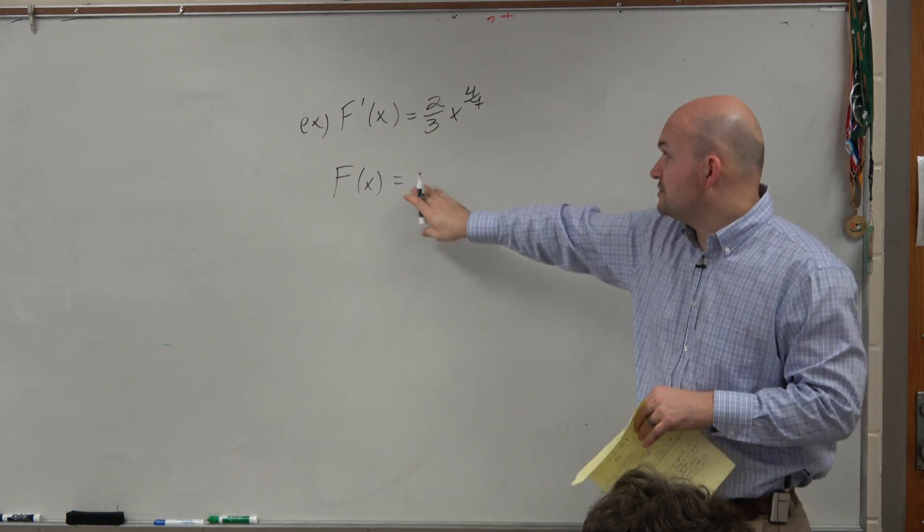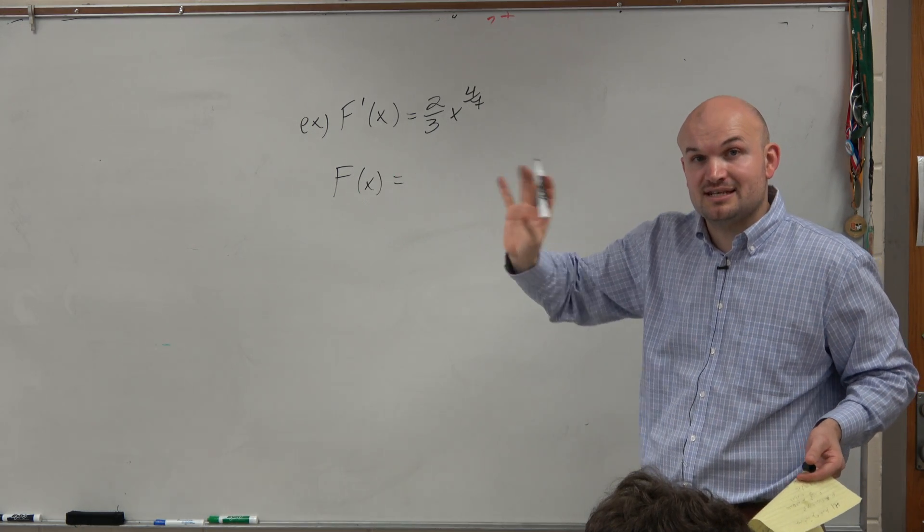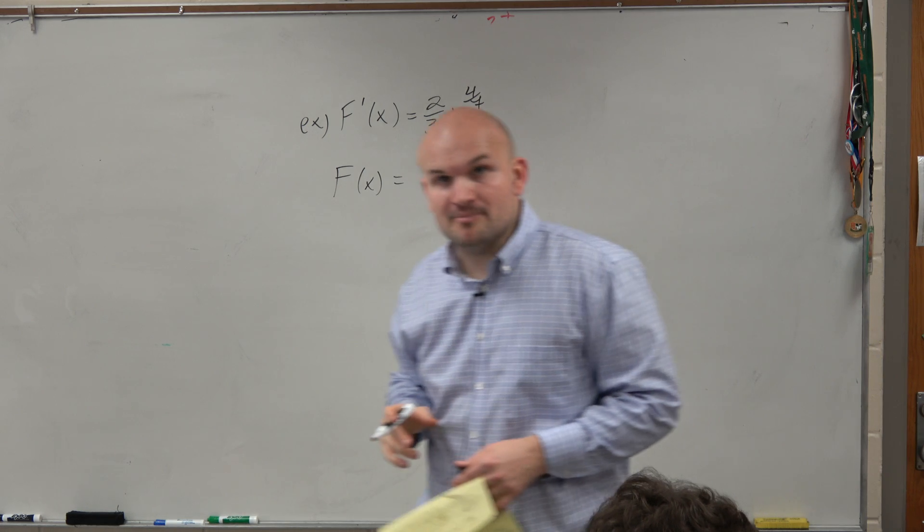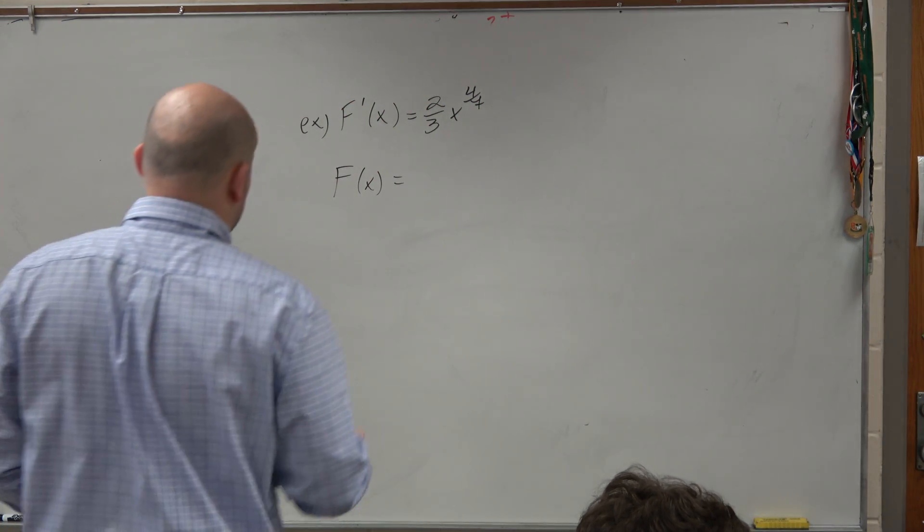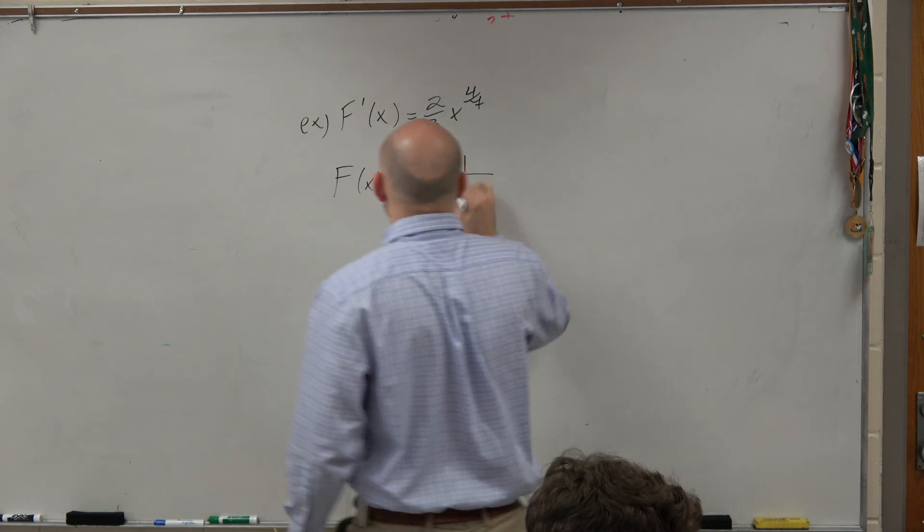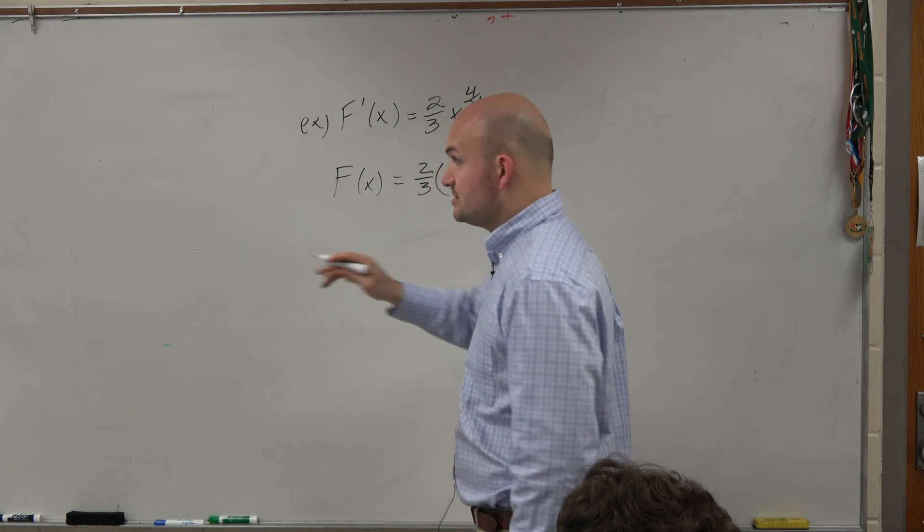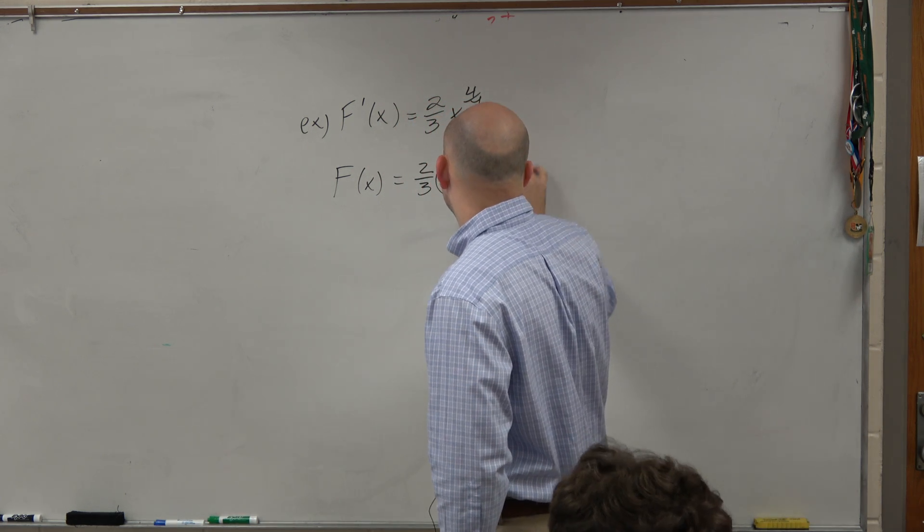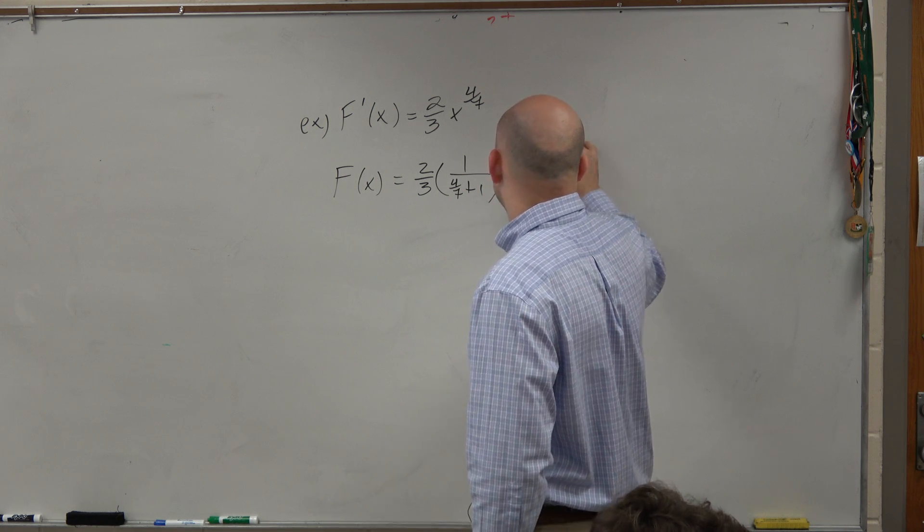Yes. Now, this constant, this is like a. So that doesn't really change, right? That just kind of remains. That a really remains the same there. So I'm going to have that 2 thirds times 1 over n, which is 4 sevenths, plus 1 times x to the 4 sevenths, plus 1.